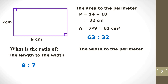What is the ratio of the width to the perimeter? We already found the perimeter is 32, and the width of this rectangle is 7. So the answer is 7 to 32. Thank you so much for watching.